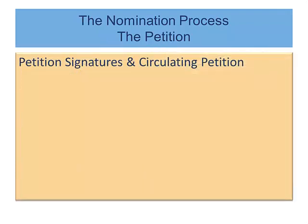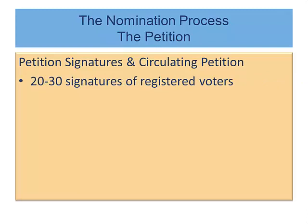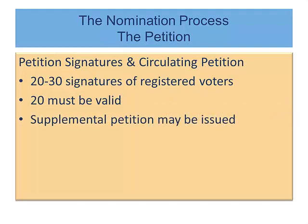Let's look at the petition signatures and circulating the petition. To qualify as a candidate on the ballot, the candidate must obtain up to 20, but no more than 30, signatures of registered voters in the district from which the candidate is running. 20 of those signatures must be valid to qualify. If after submitting all nomination documents the petition is determined to have less than 20 valid signatures, a supplemental petition may be issued. The issuance of a supplemental petition does not extend the filing deadline.